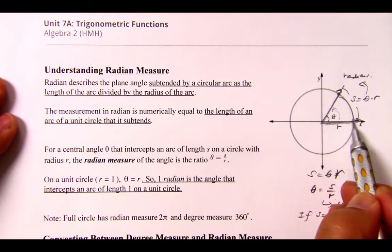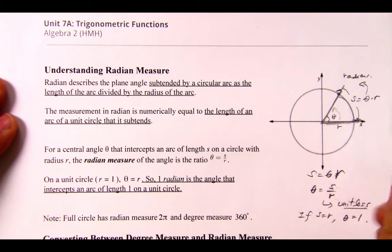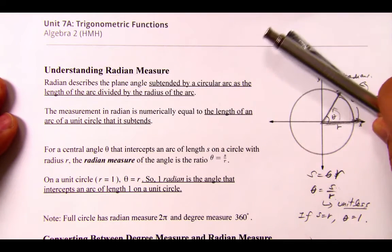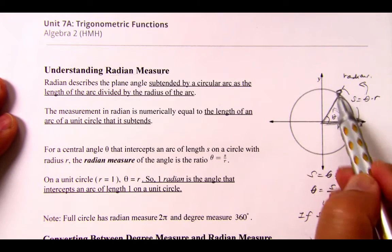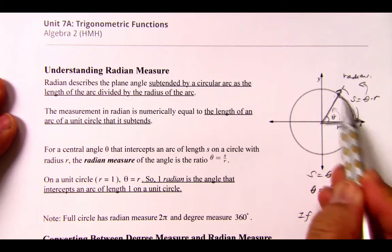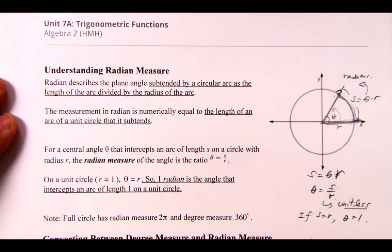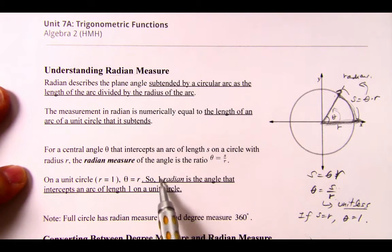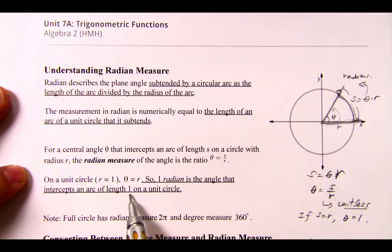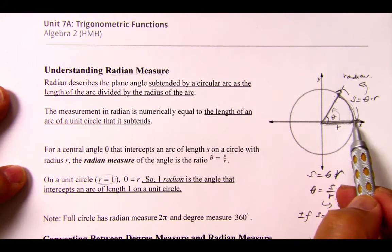So if you could get a piece of stick, the length of r, starting from this point, and you rotate about like this in a circular fashion, that length right here, this length and this length is exactly the same. So one radian is the angle that intercepts an arc of length one on a unit circle, but the radius has to be one.